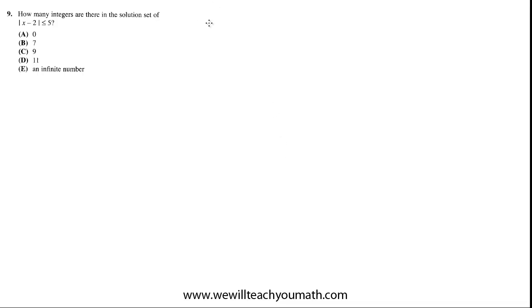So the way to solve absolute value inequalities is to break it up into two separate inequalities. And just a hint, try to remember this because it's really helpful if you can. If it's less than, it's a conjunction. So this one is a conjunction.